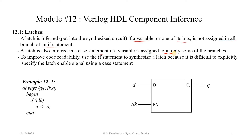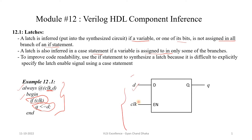Let's see one example. We have an always block with two signals in its sensitivity list: a clock signal and an input data signal D. In the begin-end block we have: if clock is high, the output gets the value D. This type of code is going to infer a latch. The latch circuit has input D, input clock, and output Q. This is how this RTL code gets converted into a netlist containing this particular latch.